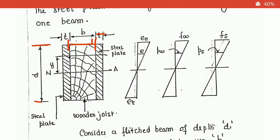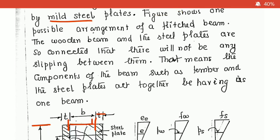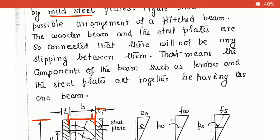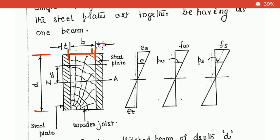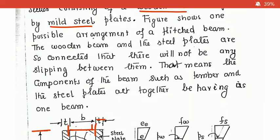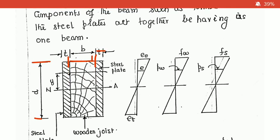We have to calculate this possible arrangement and ask questions about it. The wooden beam and the steel plates are connected such that there will not be any slipping between them. Flitched beams are a combination of steel and wooden sections and will act as a single unit.